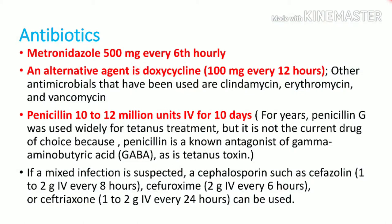Antibiotics are not the first-line choice in tetanus but should be started after airway and muscle spasm are controlled. The ideal antibiotic is metronidazole 500 mg every 6 hours. Alternatively, doxycycline 100 mg twice daily or penicillin 10 to 12 million units IV for 10 days can be given. If local wound infection is suspected, add a cephalosporin such as ceftriaxone to cover gram-negative organisms as well.